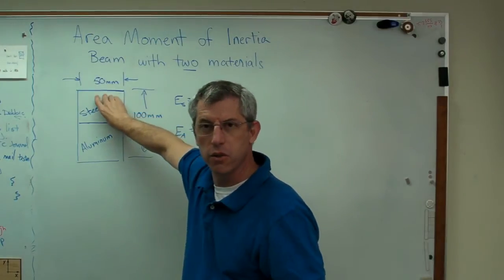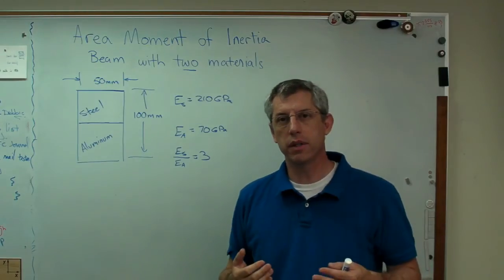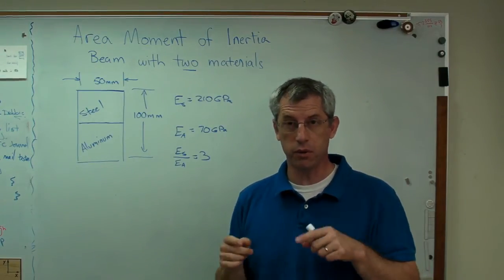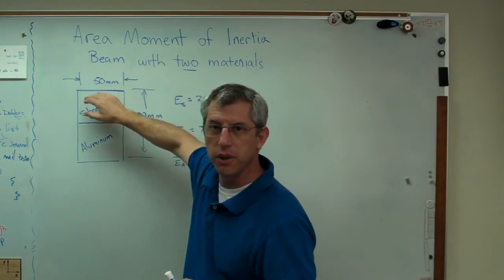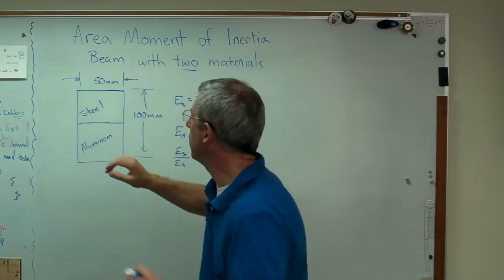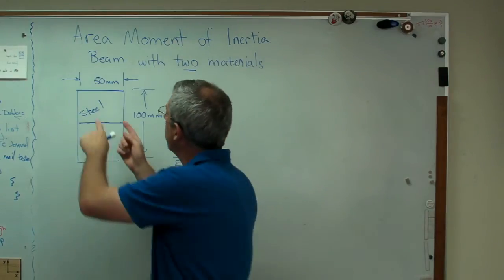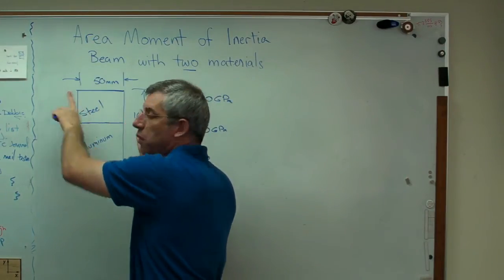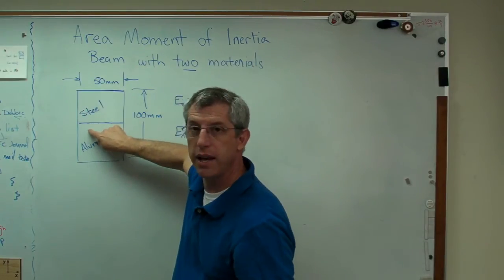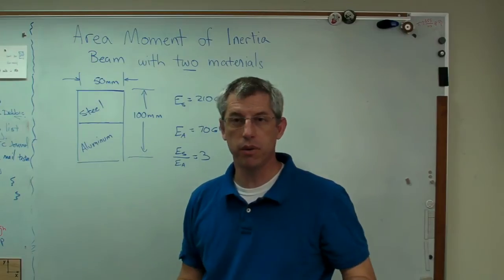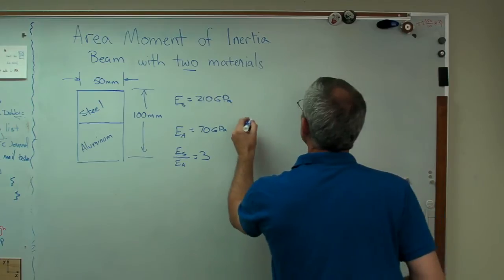Well, how do I make this three times stiffer than this? Well, I could make it taller, right? Because the stiffness is a function of height cubed. Remember that 1/12 bh cubed? Well, that's not going to work out too well. There's no convenient number here. I could do it, but it's not convenient. The other thing I can't help noticing is that that 1/12 bh cubed thing, that means that stiffness is proportional to width. So if the width of this were three times that, and this were made out of aluminum, I would have an equivalent beam, one that would act the same, even though it's made out of one material. So that's what I'm going to do.